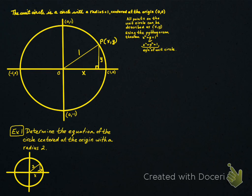In example 1, we're asked to determine the equation of the circle centered at the origin with a radius of 2. We're going to say x² + y² = 2², so the equation is going to be x² + y² = 4.